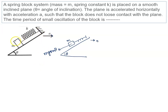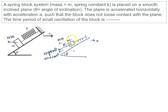If the horizontal acceleration is a, then there is a pseudo-force ma. If this angle is theta, the component of this pseudo-force along the incline is ma cos theta. So the net downward force along the incline is mg sin theta and ma cos theta. Let the system be in equilibrium — there must be some extension in the spring, which we call x naught.